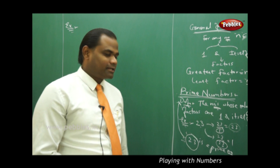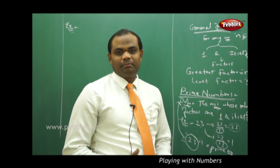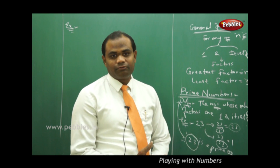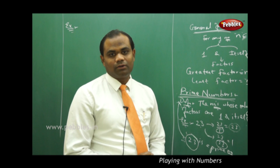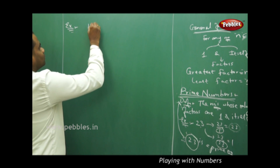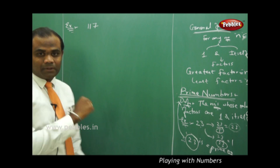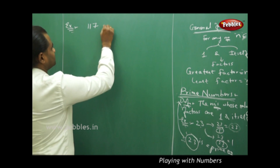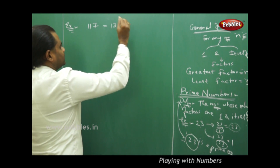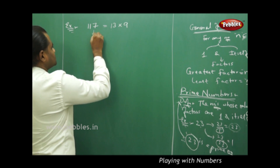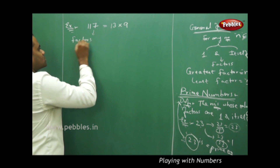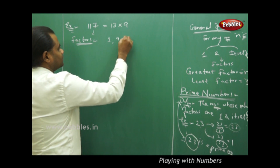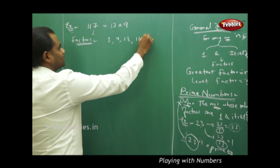Now let's take another example where we identify whether a number is prime or not — by identifying the factors and then deciding. Let me take the number 117. Looking at its factors, I can clearly see that 117 can be written as 13 times 9. Therefore the possible factors I find for 117 are 1, 9, 13, and 117.